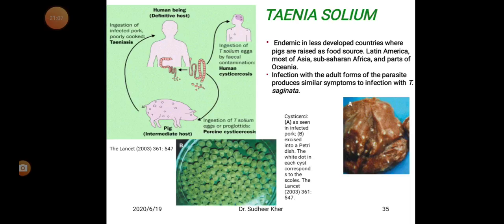Infection with adult forms of Taenia solium produces similar symptoms to infection with Taenia saginata. However, Taenia solium has one major complication: neurocysticercosis, where cyst forms are seen in the brain. This is a key difference between Taenia saginata and Taenia solium — Taenia saginata does not produce this complication. Taenia solium also differs in worm length, scolex structure, and presence of hooks.